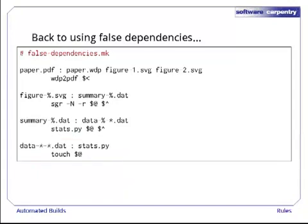If we really want to avoid making summary1.dat and summary2.dat depend on stats.py separately, the only way is to go back to the false dependencies we introduced in the previous episode. This make file tells MAKE to update the timestamps on the raw data files using touch whenever stats.py changes. This indirectly triggers the recreation of the summary files. It does what we want, just in a roundabout way.